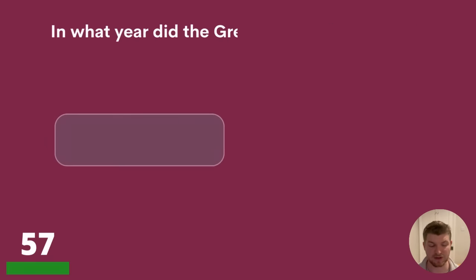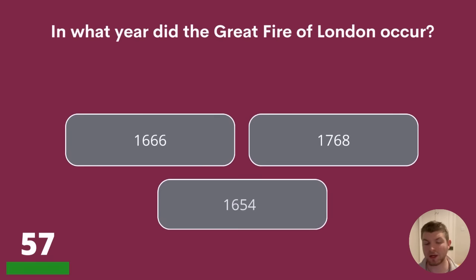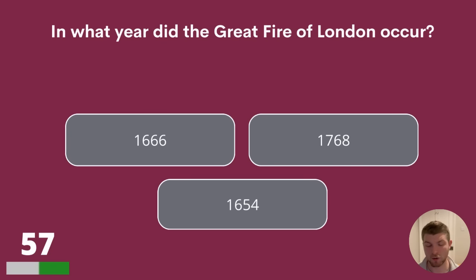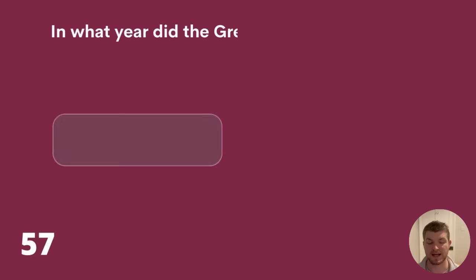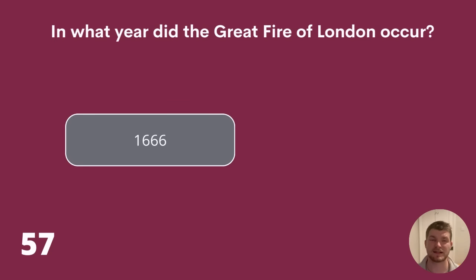Question 57. In what year did the Great Fire of London occur? 1666, 1768, or 1654? The answer is 1666.